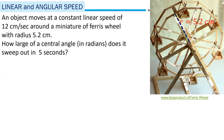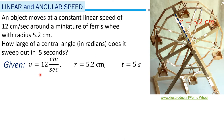Example: An object moves at a constant linear speed of 12 centimeters per second around a miniature Ferris wheel with radius 5.2 centimeters. It's like an experiment — the object is placed on the Ferris wheel moving at 12 centimeters per second. How large a central angle in radians does it sweep out in five seconds?